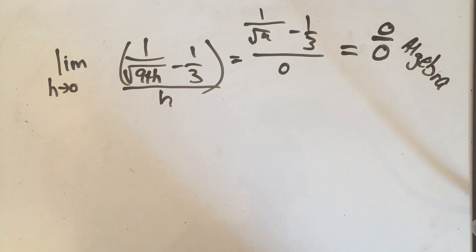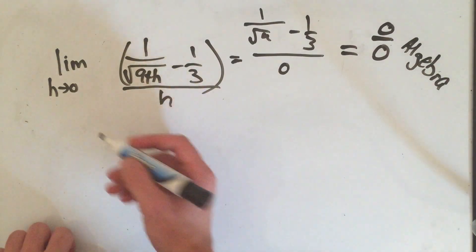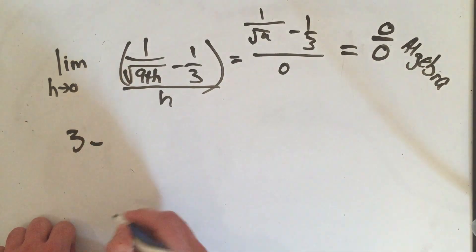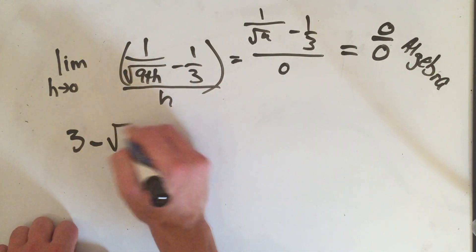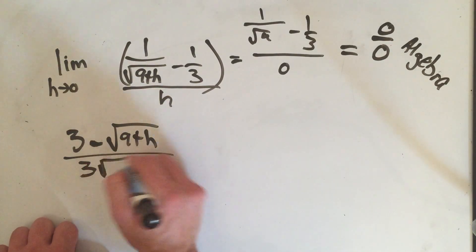I see a square root and I see two fractions. So are we going to multiply by the conjugate or are we going to get a common denominator? And the answer is we're going to get a common denominator first. So I get common denominators by cross multiplying. So 3 times 1 is 3, minus sign in the middle, 1 times square root of 9 plus h is square root of 9 plus h, and I multiply the denominators together.